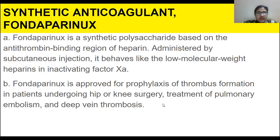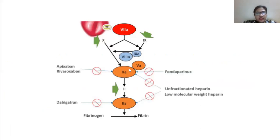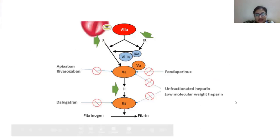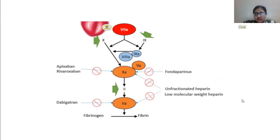Fondaparinux is a synthetic polysaccharide based on the antithrombin-binding region of heparin. Administered by subcutaneous injection, it behaves like low molecular weight heparin in inactivating factor 10a. It is used for prophylaxis of thrombus formation in patients undergoing hip or knee surgery, treatment of pulmonary embolism, and in deep vein thrombosis.